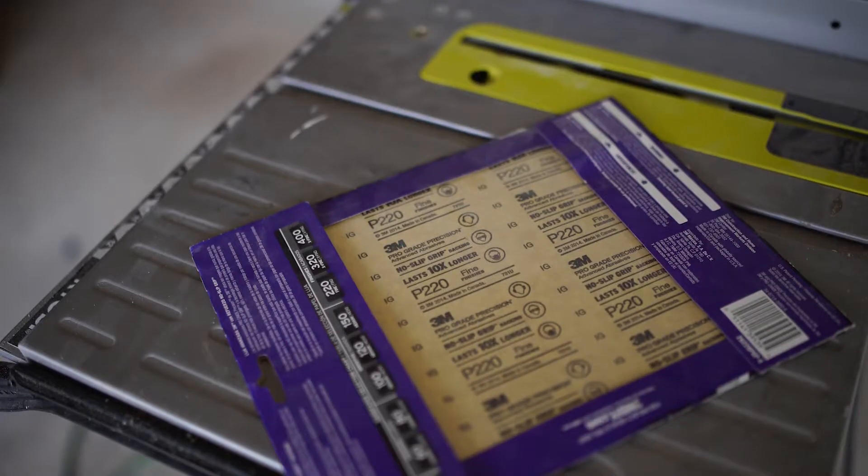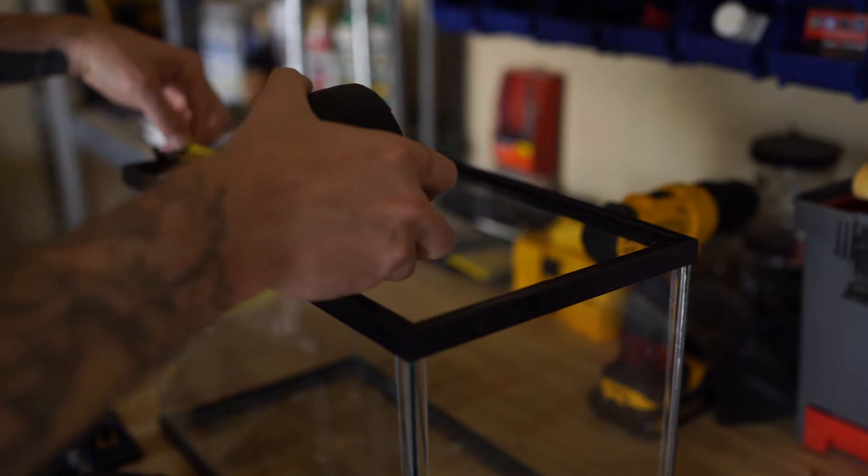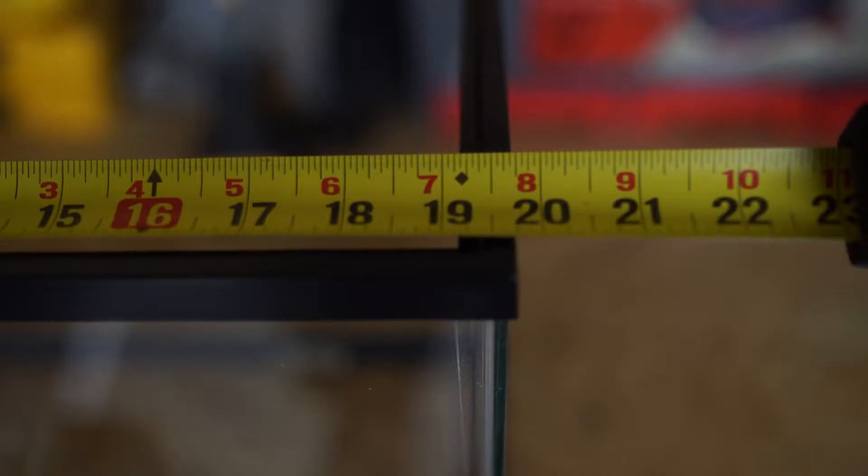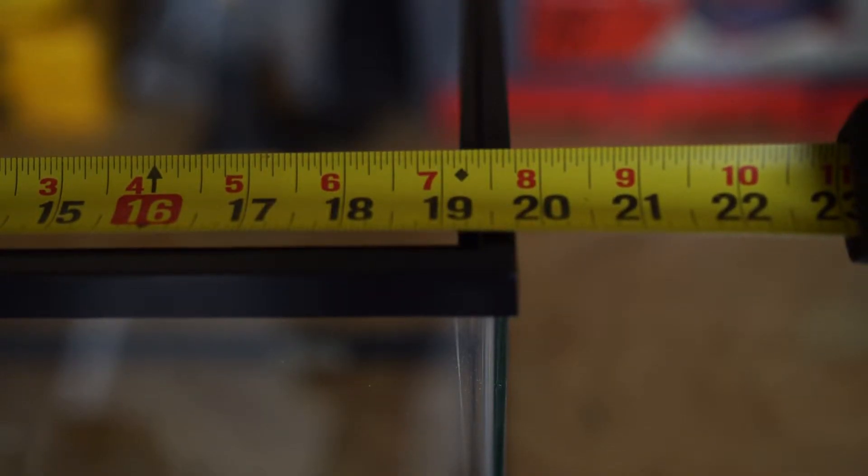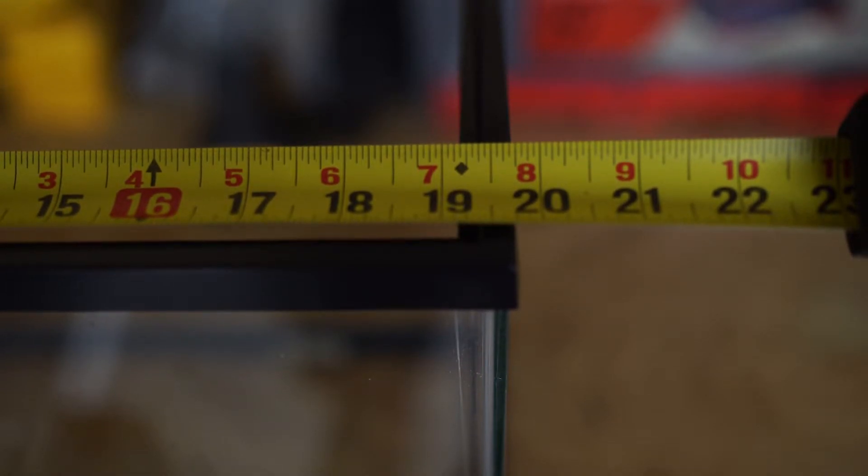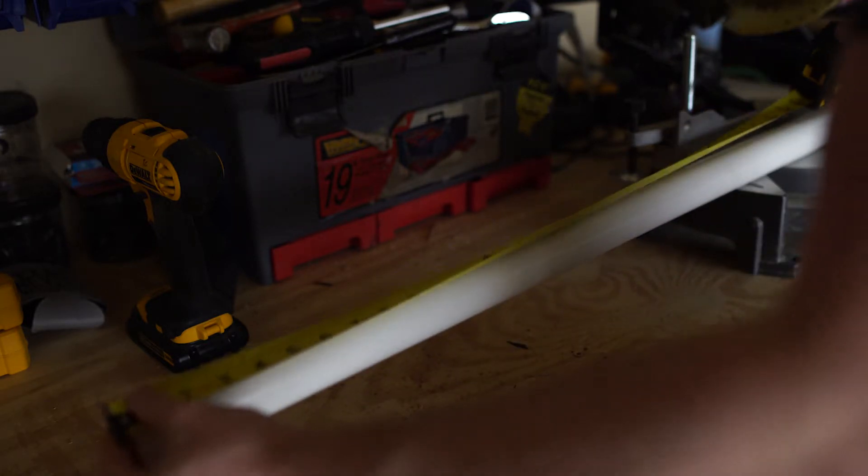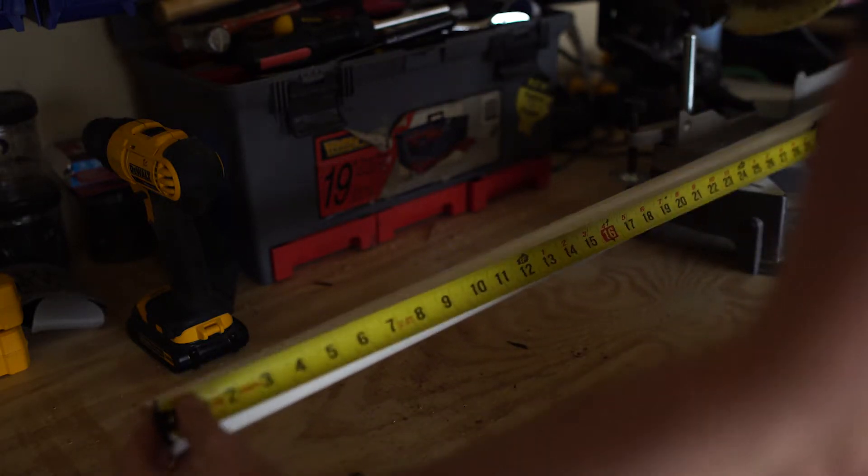An orbital sander or just some sandpaper and some elbow grease. Alright, the first thing you need to do is measure the top of your aquarium. This is what the PVC pipe will rest on, so you need to make sure to be very precise. On this aquarium, my measurement is 19 and 5/16 inches. Once you have your measurement, mark it on your PVC pipe and make your cut. Remember: measure twice, cut once.